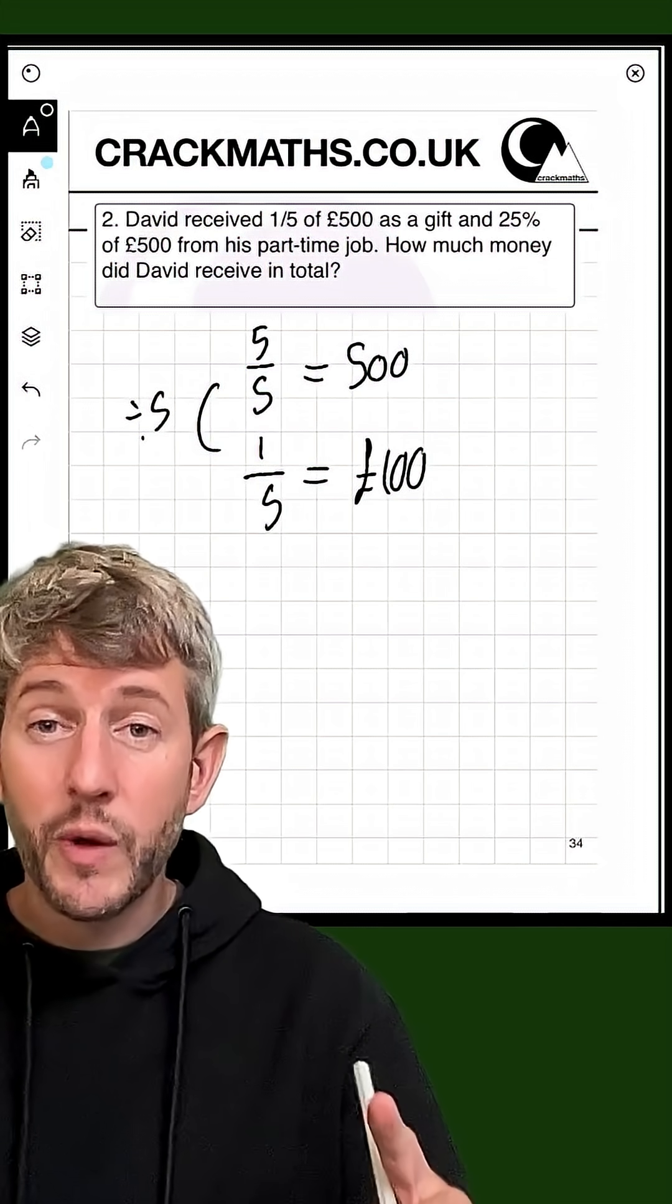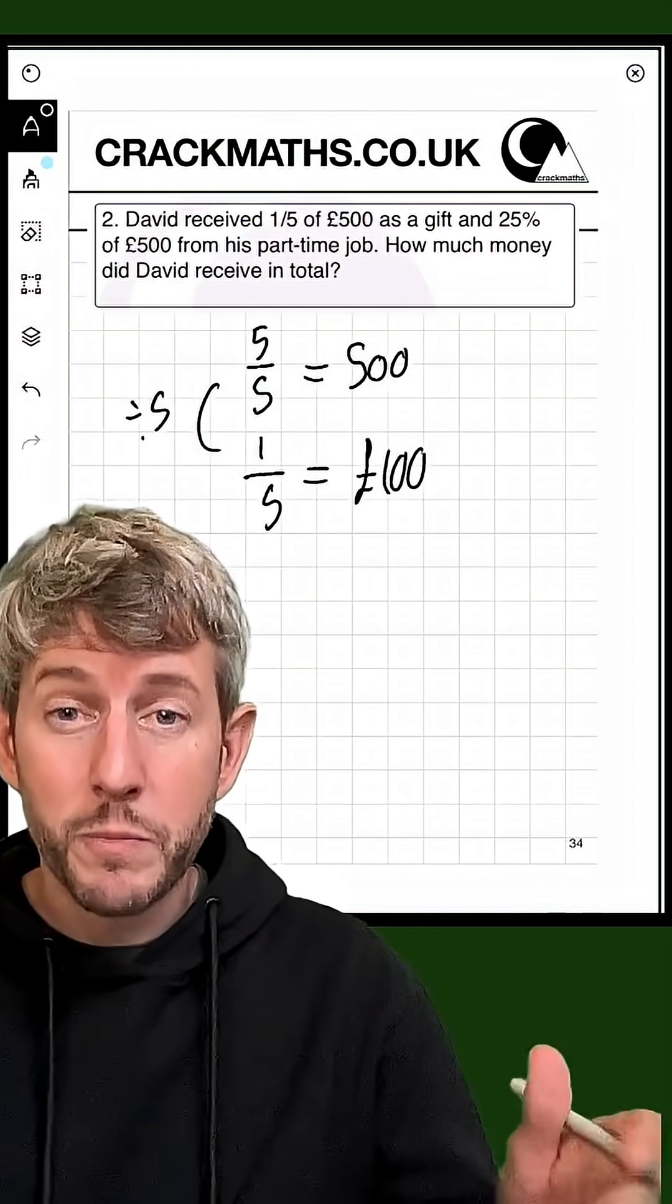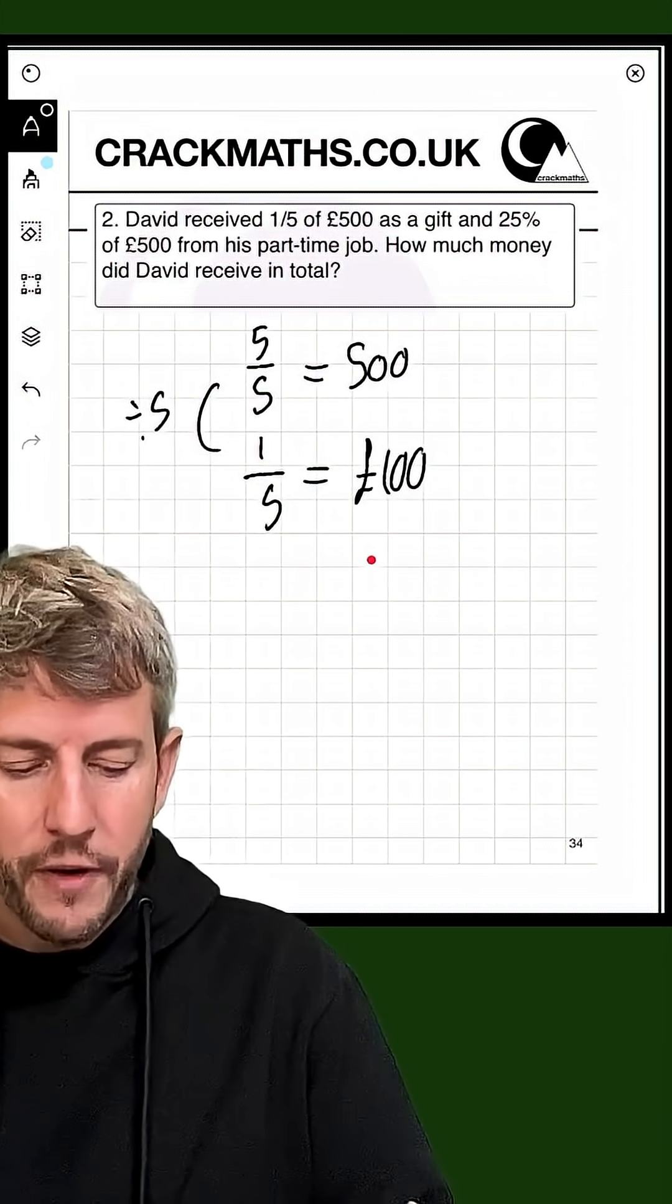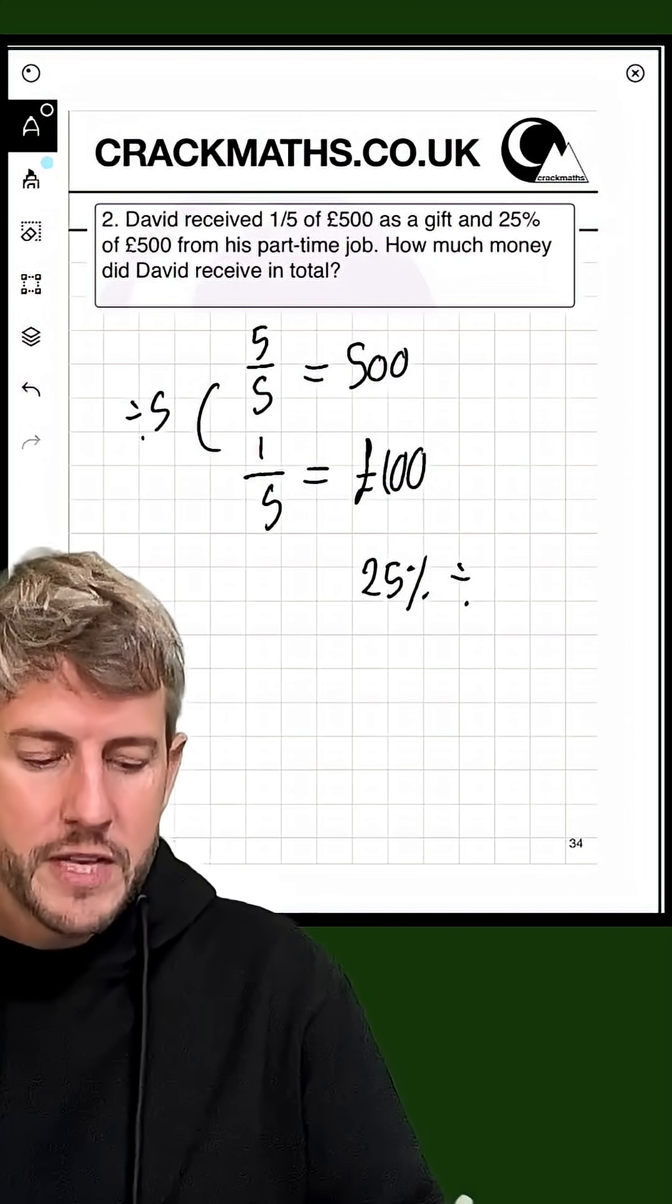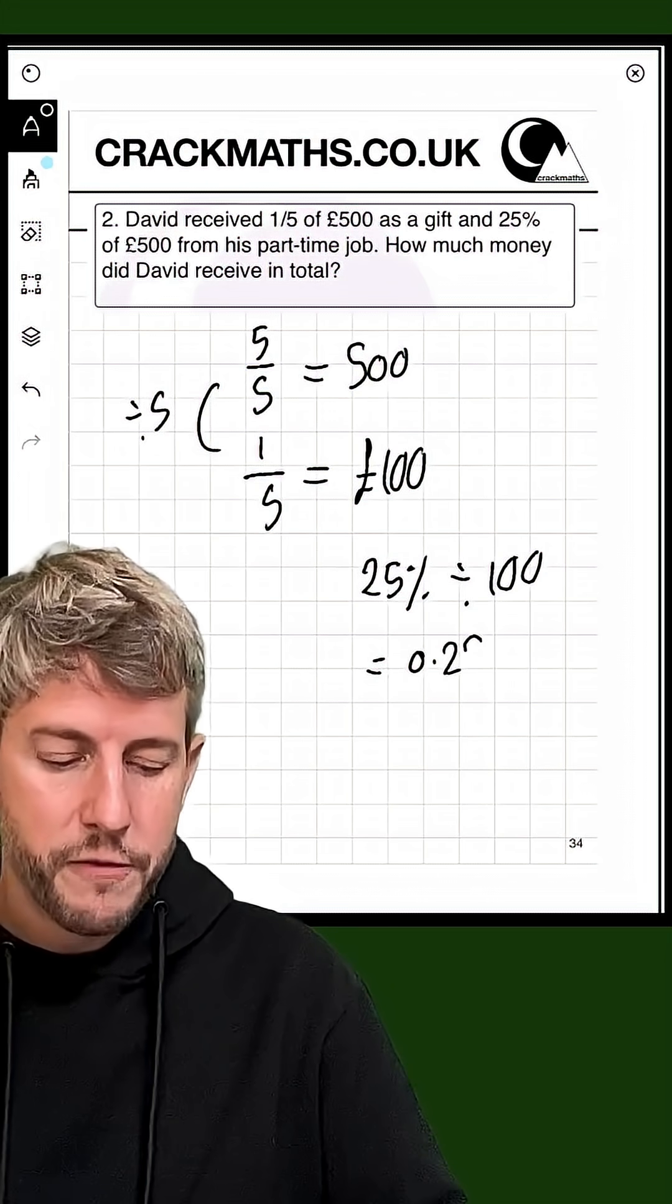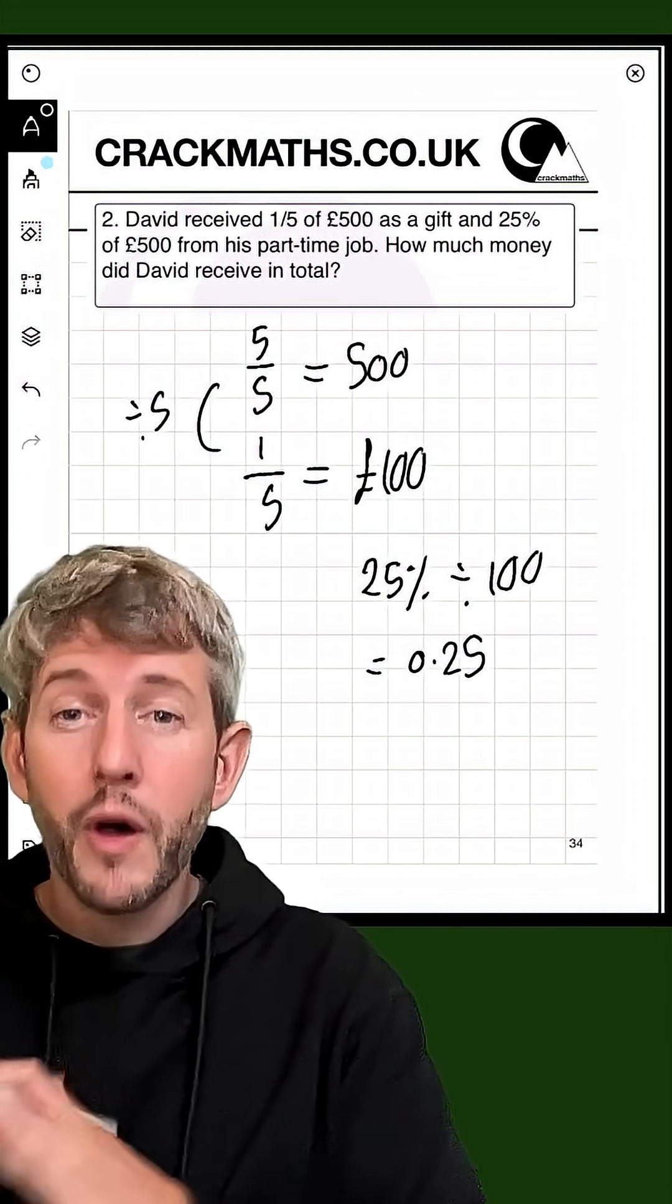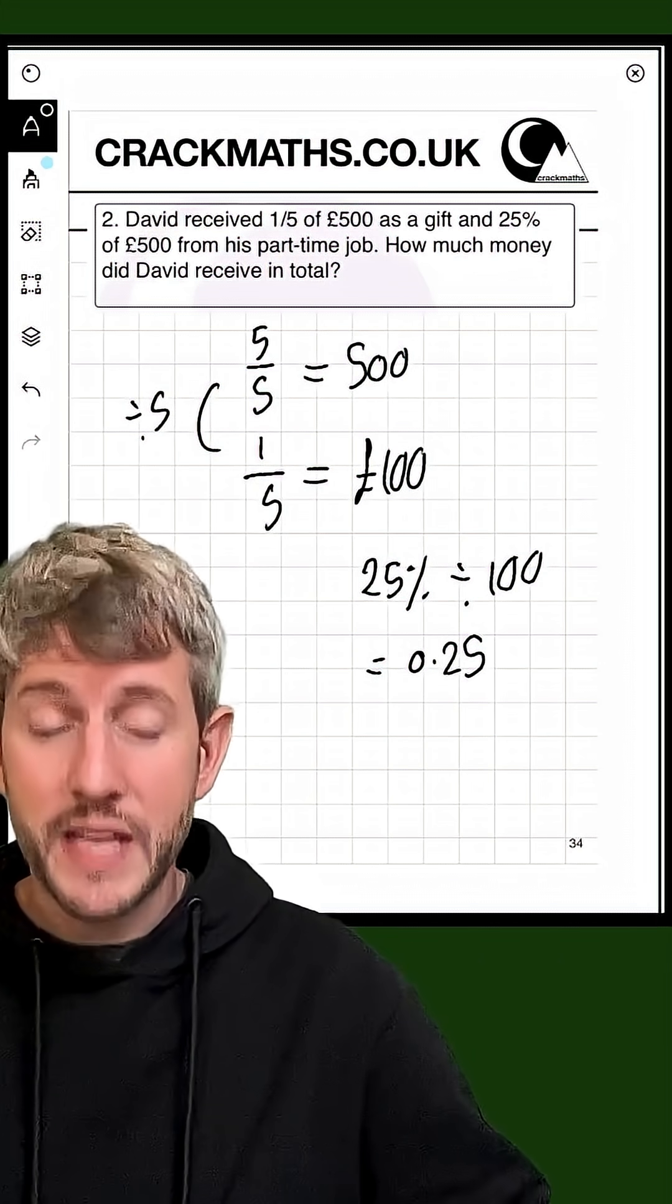Now 25%, we can do it a number of ways, but I'm going to do it using the decimal equivalent multiplier way. So if I want to find 25%, I just do 25% divided by 100 to get me the decimal equivalent. So that tells me that this is equal to 0.25. Now any number multiplied by 0.25 will give me 25% of that number.